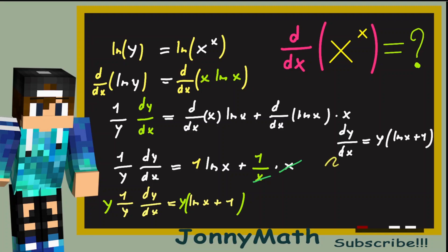But what is y? Well, y is just our previous function x to the x, right? So just replace y with x to the x and we get dy over dx equals x to the x times the natural log of x plus 1. And we are done. This is the derivative of x to the x.